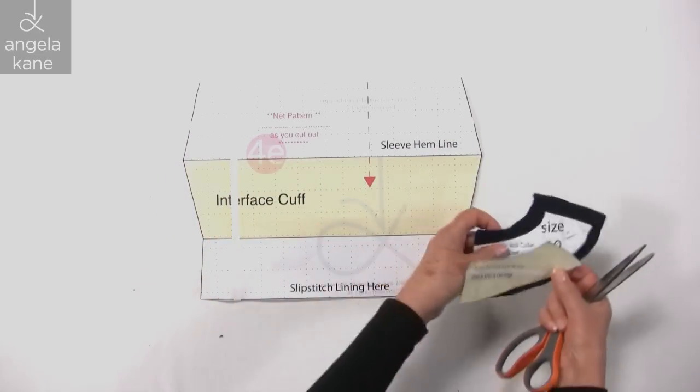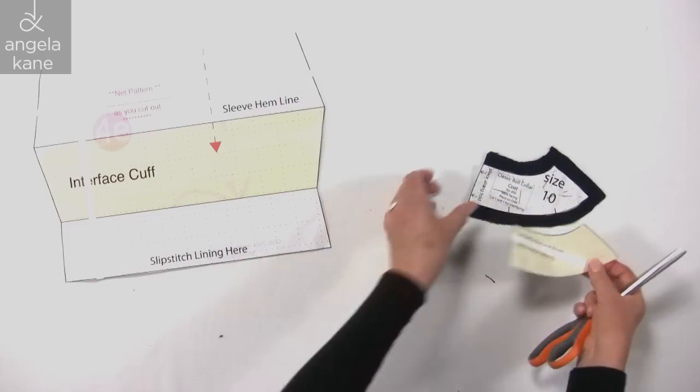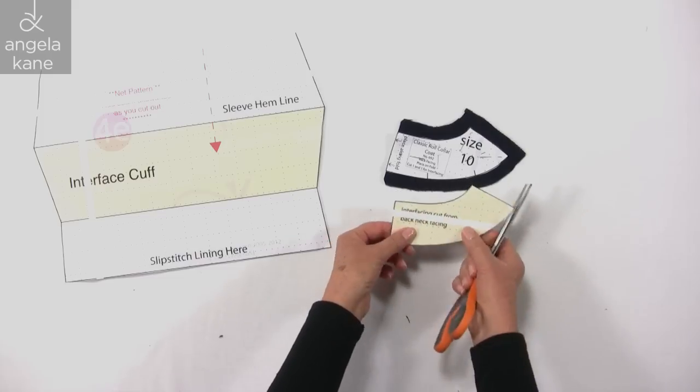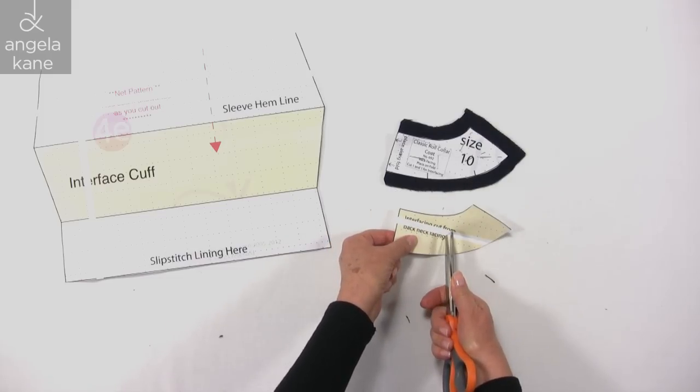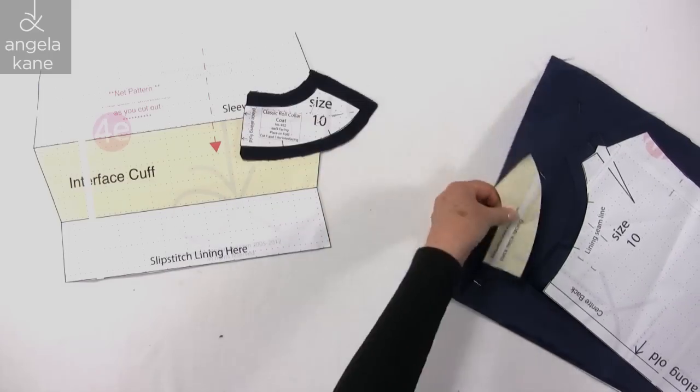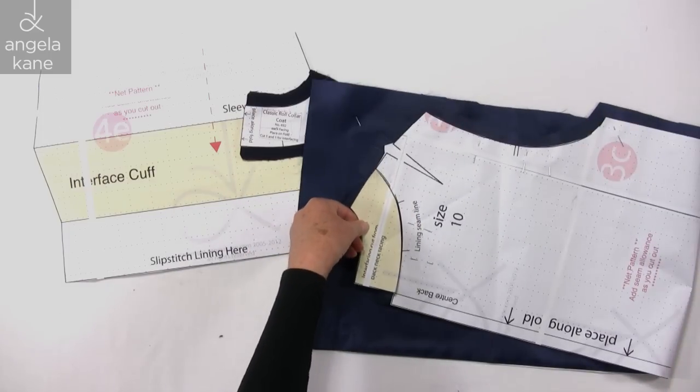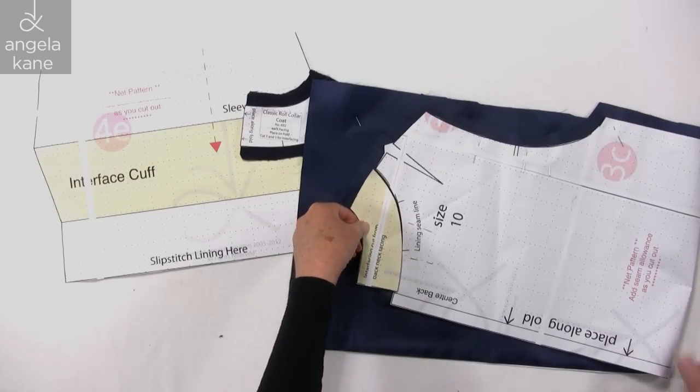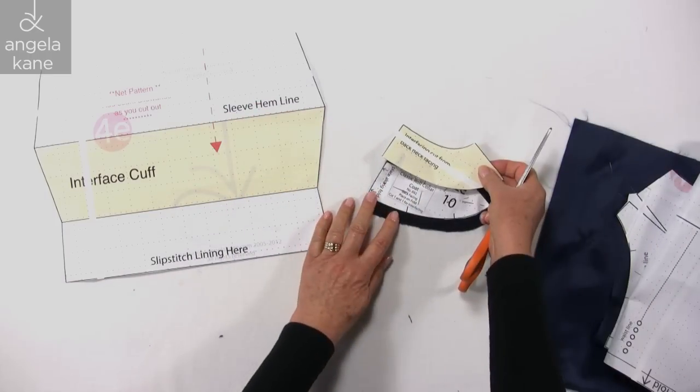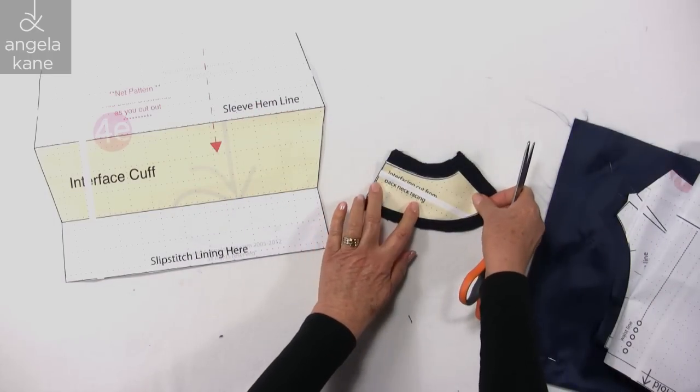These two are the same also. The back neck facing and the interfacing. This was cut from the garment back to create the lining pattern, so we need to cut that from our interfacing.